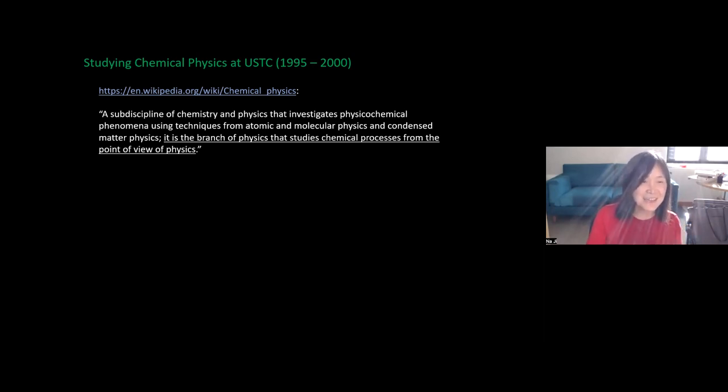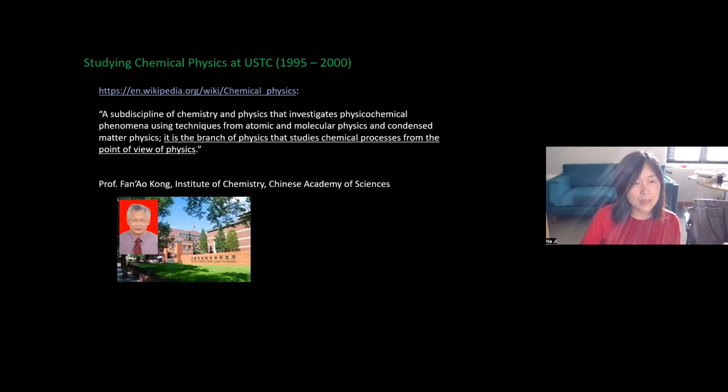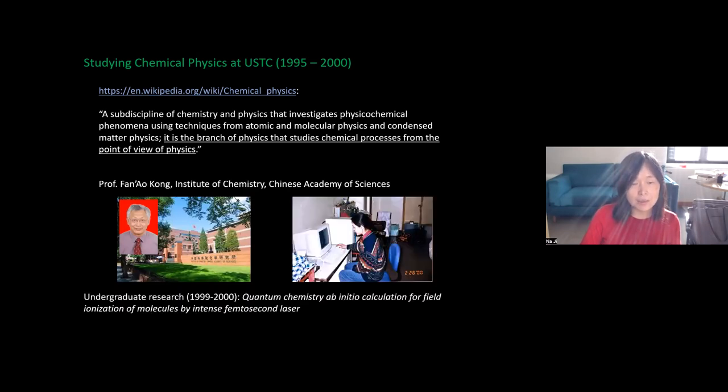I would hear grumblings from my classmates: 'Oh, she's very good at taking exams.' But I just moved on, kept getting the highest scores despite everything. In my senior year, we had a seminar course where professors, sometimes from outside the university, gave talks about ongoing research in chemical physics. I was very much inspired by Professor Fanao Kong, who was working in the Institute of Chemistry at the Chinese Academy of Sciences. I wrote to him and asked if I could do one year of undergraduate research in his lab. He agreed, so I spent one year in Beijing. The project I worked on was quantum chemistry—ab initio calculations of how molecules break apart in very intense electric fields. It was really a wonderful year. What I learned is that I actually enjoyed doing research, and second, more importantly, that theoretical computational work is not for me. I decided I would become an experimentalist.